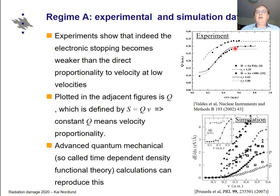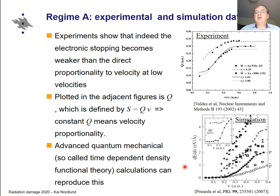There are experiments and simulations from a couple of different papers which show that at low energies the electronic stopping power becomes weakened. The upper plot compares to the Lindhard theory and you can see it weakens below that theory. The lower plot shows the stopping power directly, and indeed the stopping power appears to go to zero at low ion velocities. We are talking about a few kV in these plots. The simulations here use time-dependent density functional theory — TDDFT — a very advanced quantum mechanical simulation technique which can also reproduce this trend of a weakening stopping power.